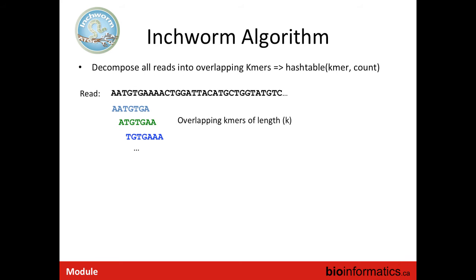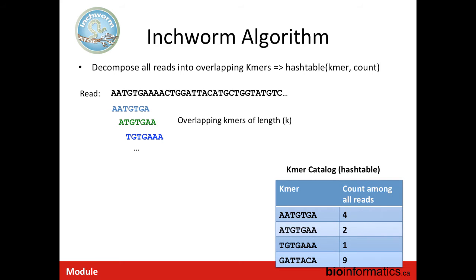Walking through the Inchworm algorithm: it takes a read sequence and extracts k-mer sequences. Rather than building a full de Bruijn graph, it builds a hash table with two columns — one column is the k-mer sequence, the other is the count of how many times that k-mer appears in the entire read set. Key-value pairs: the key is a k-mer sequence and looking up that key gives the count. Inchworm then determines a seed k-mer — the one with the highest count in the table.